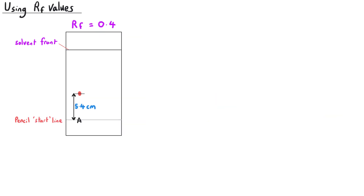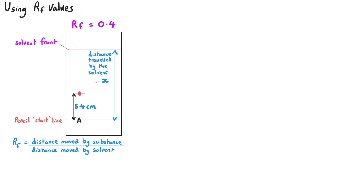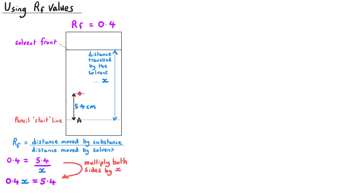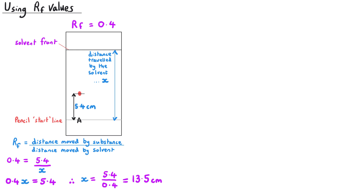You might be given a chromatogram showing somebody's results with one measurement given and the RF value for a particular substance, and be expected to calculate an unknown value. I recommend writing down the RF expression — RF equals substance distance divided by solvent distance — and substituting in what you know. For example, if the RF value is 0.4 and the sample has travelled 5.4 centimetres, to find the solvent distance: 0.4 equals 5.4 divided by the solvent distance. Multiplying both sides by the solvent distance gives 0.4 × solvent distance = 5.4, then dividing by 0.4 gives a solvent distance of 13.5 centimetres.